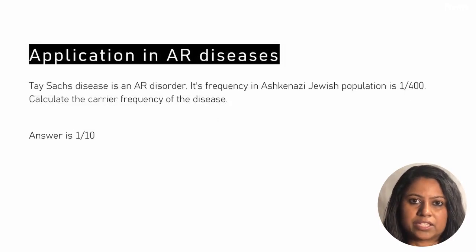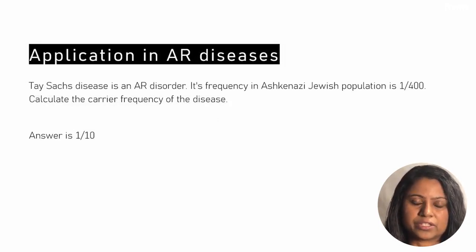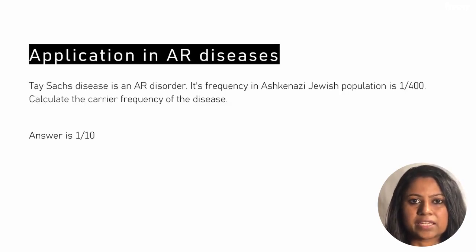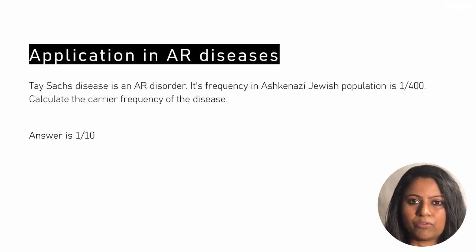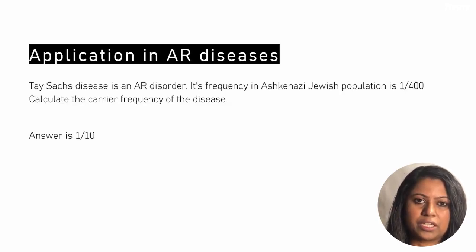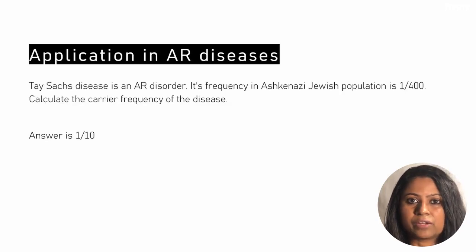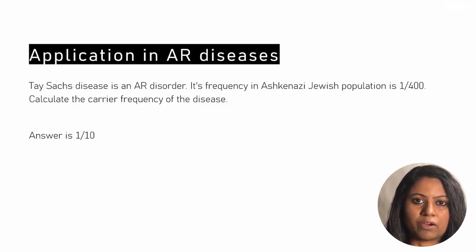Let's look at an application of the Hardy-Weinberg equation in autosomal recessive disease. Tay-Sachs is an autosomal recessive disorder with a frequency of 1 in 400 in the Ashkenazi Jewish population. How do we calculate the carrier frequency of Tay-Sachs disease?